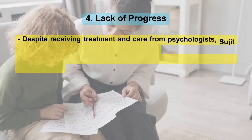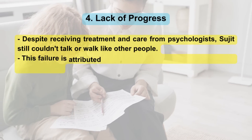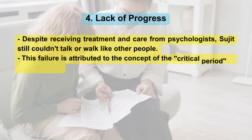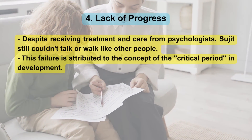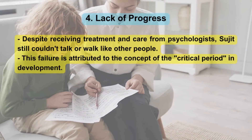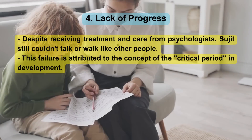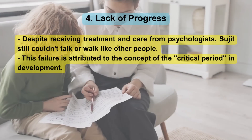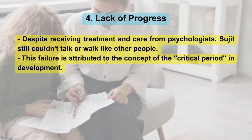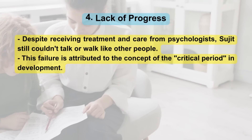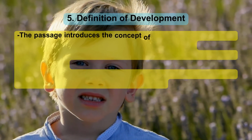Lack of progress: Despite receiving treatment and care from psychologists, Sujit still couldn't talk or walk like other people. This failure is attributed to the concept of the critical period in development.